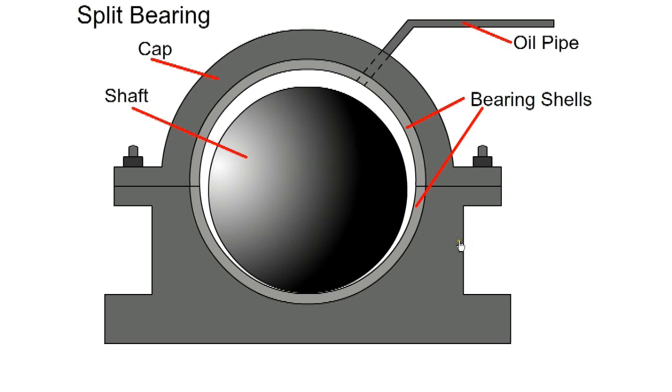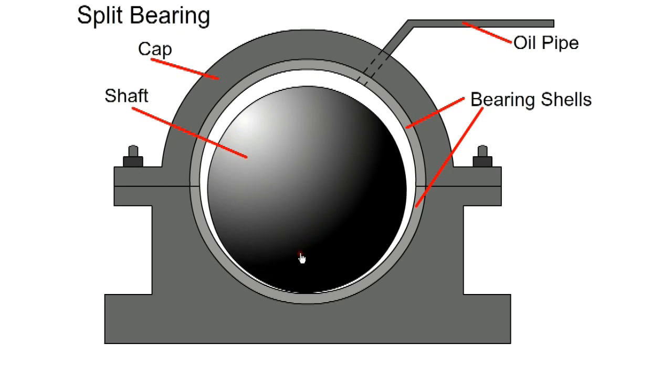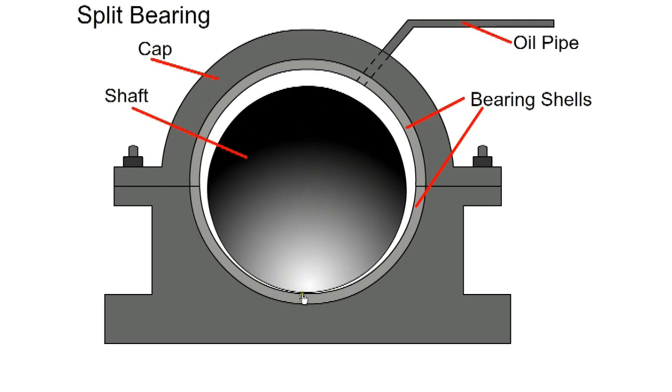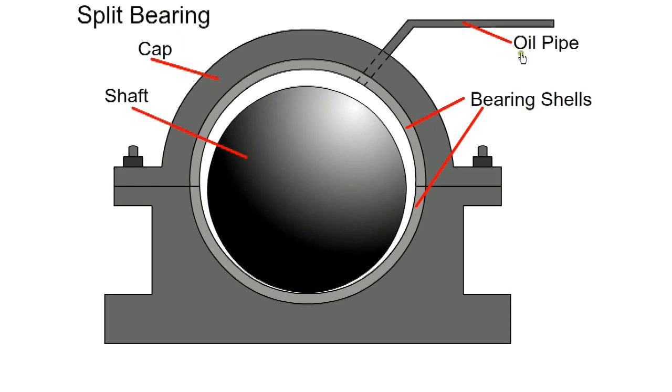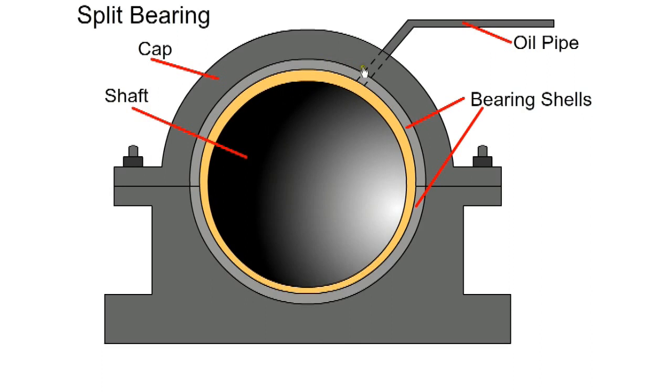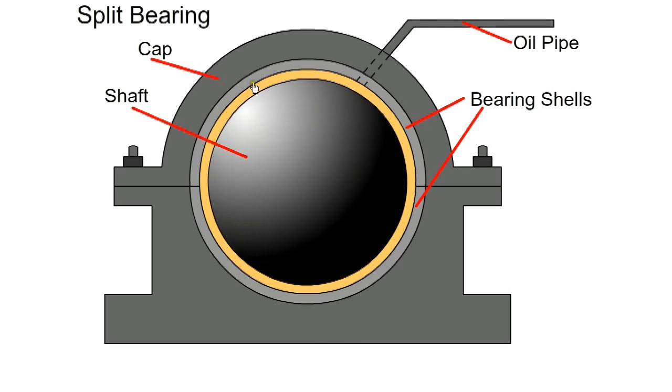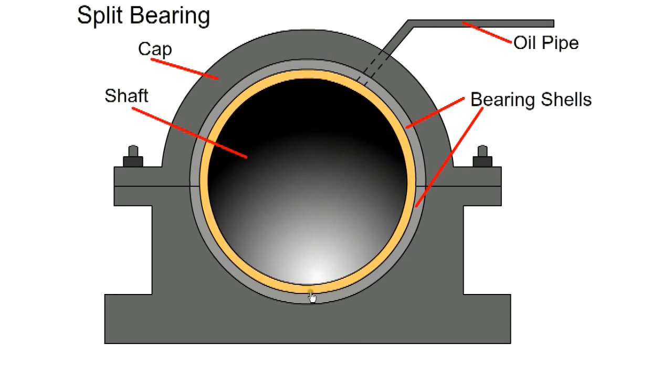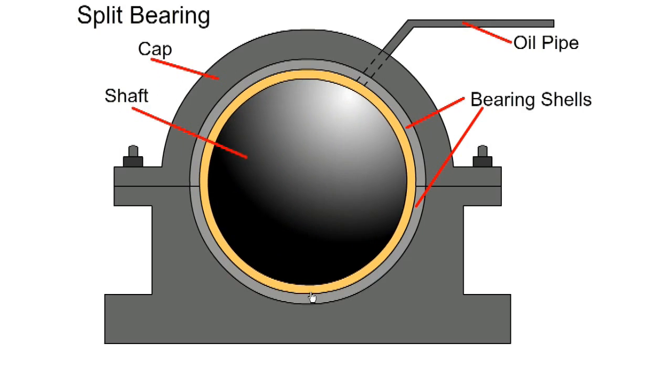The bearings in an engine use hydrodynamic lubrication. There is a very small clearance between the shaft and the bearing journal. When the engine is started the shaft is running without lubrication for a short period. When oil is introduced a film of oil is dragged around by the shaft and the shaft is then centred in the bearing housing. Now we have hydrodynamic lubrication.